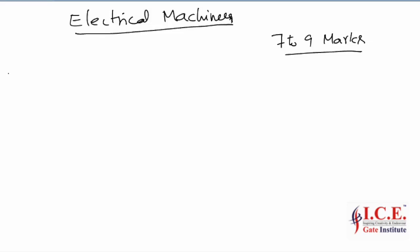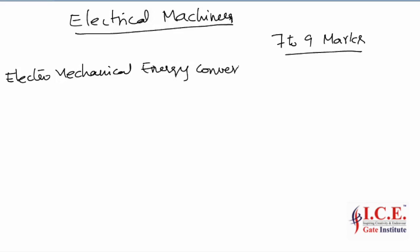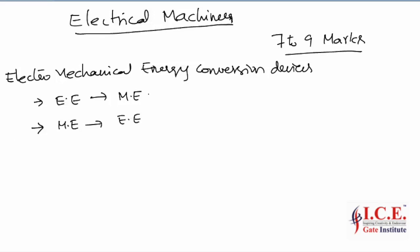The electrical machine is an electromechanical energy conversion device which performs two operations: either it converts electrical energy to mechanical energy, or it converts mechanical energy to electrical energy. If the device performs the first operation — electrical energy to mechanical energy — it is defined as a motor. If it converts mechanical energy to electrical energy, it is defined as a generator.